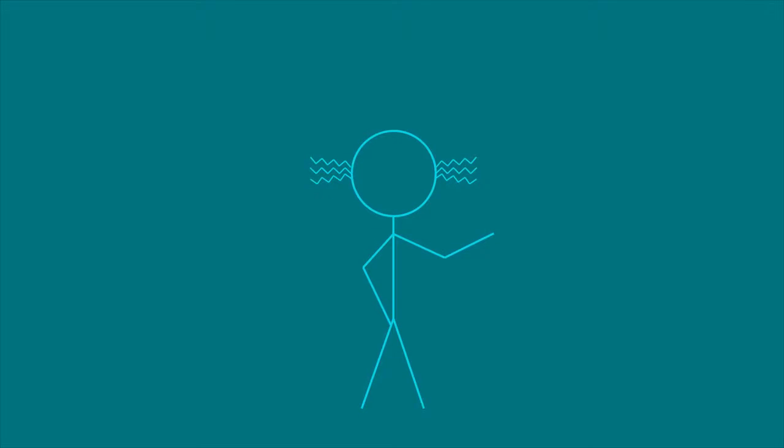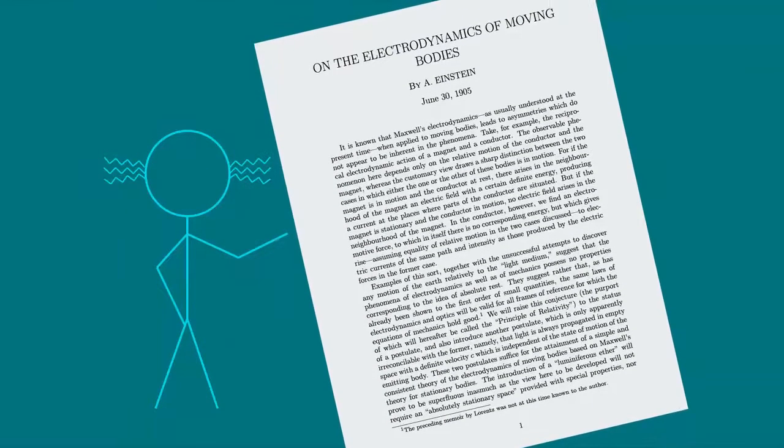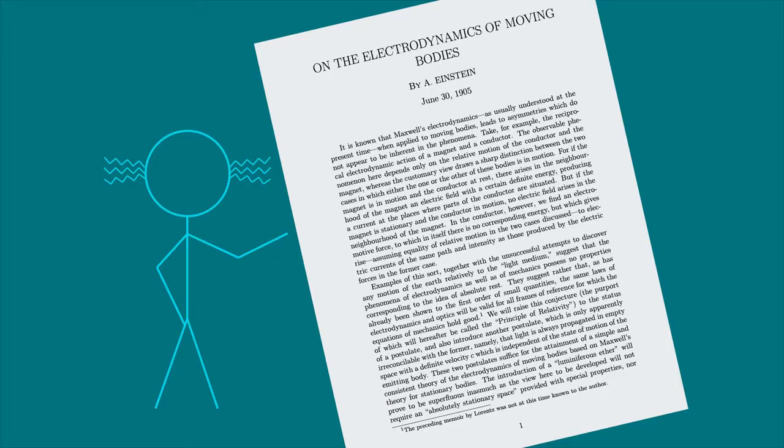In 1905, Einstein revolutionized the world of physics with his paper entitled On Electrodynamics of Moving Bodies, which would later be called The Theory of Special Relativity.